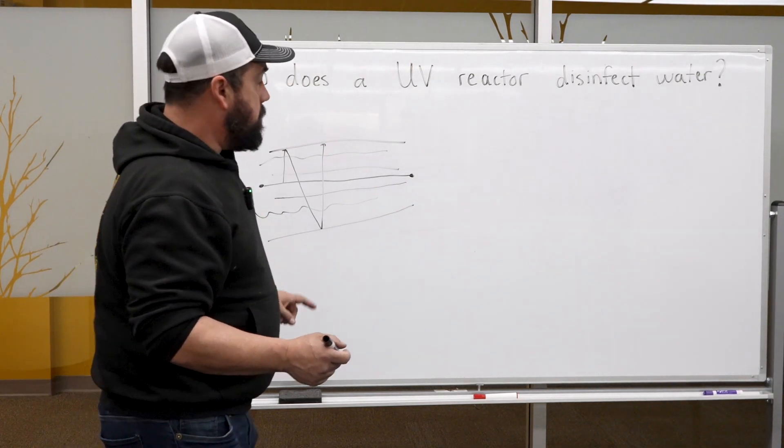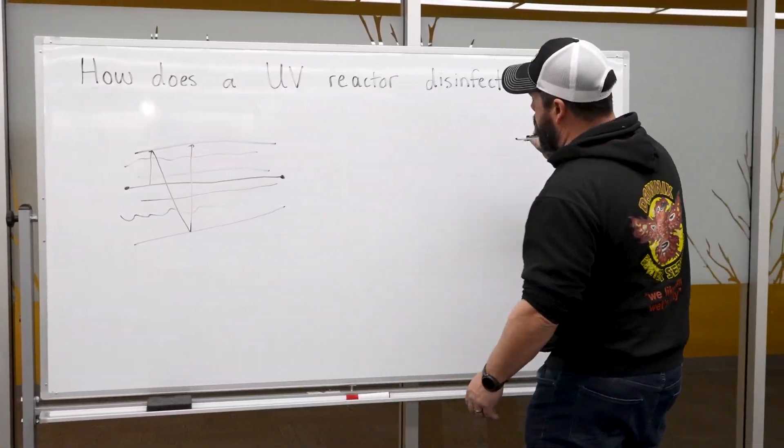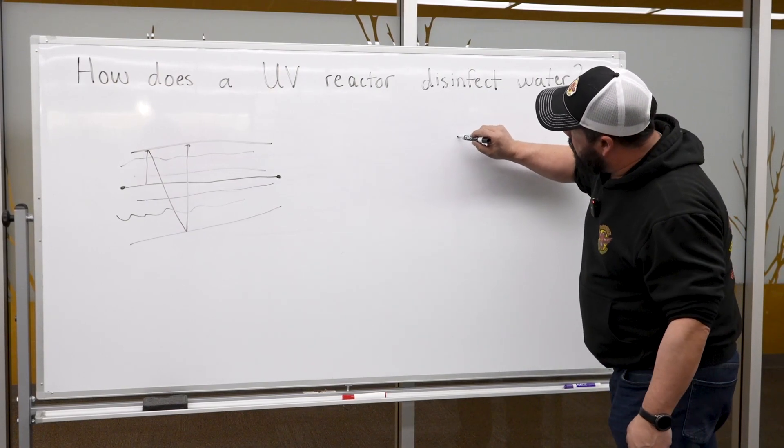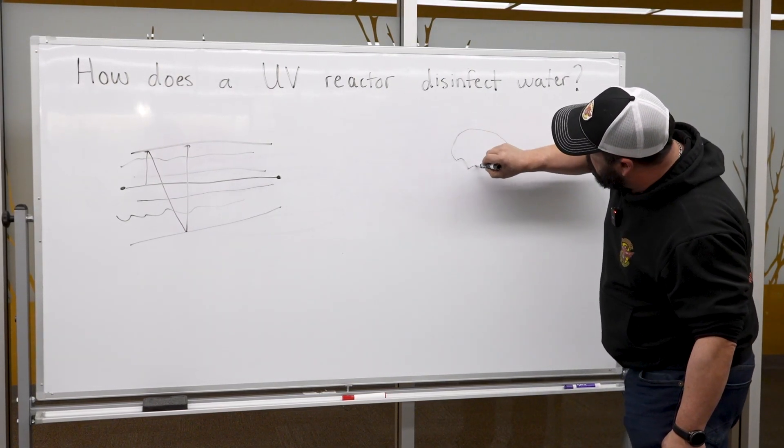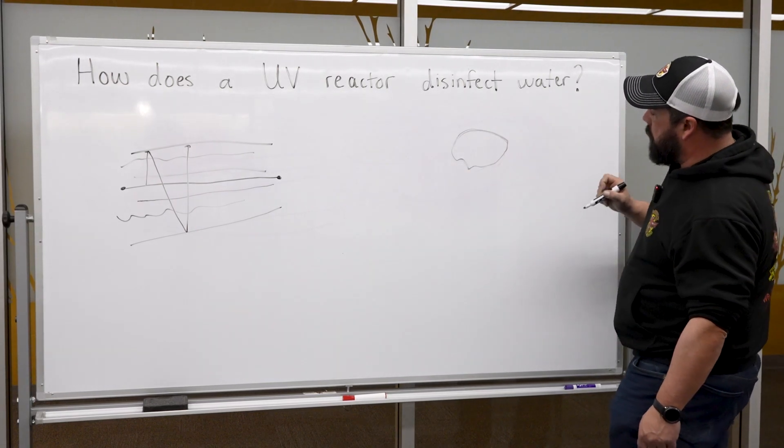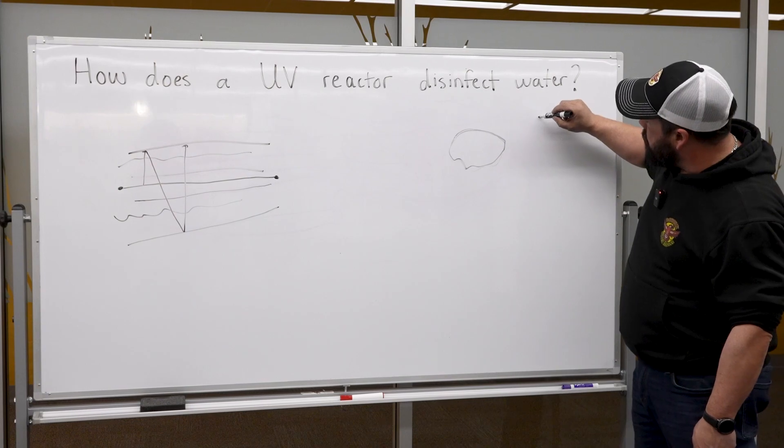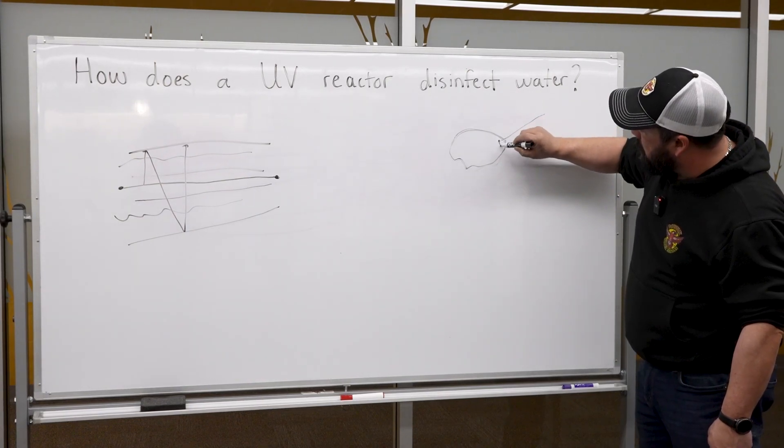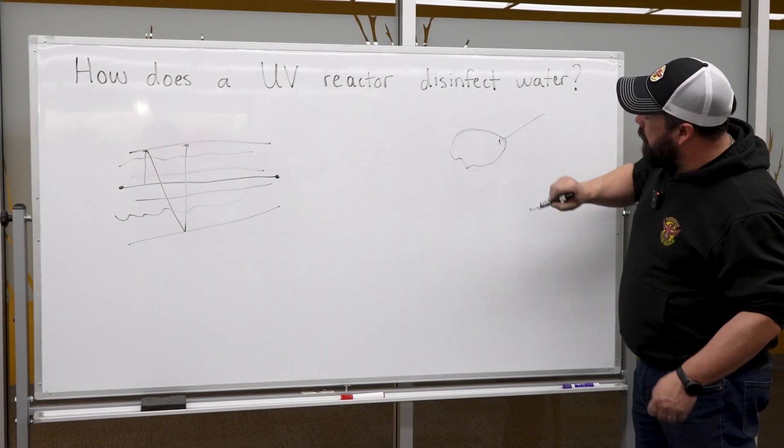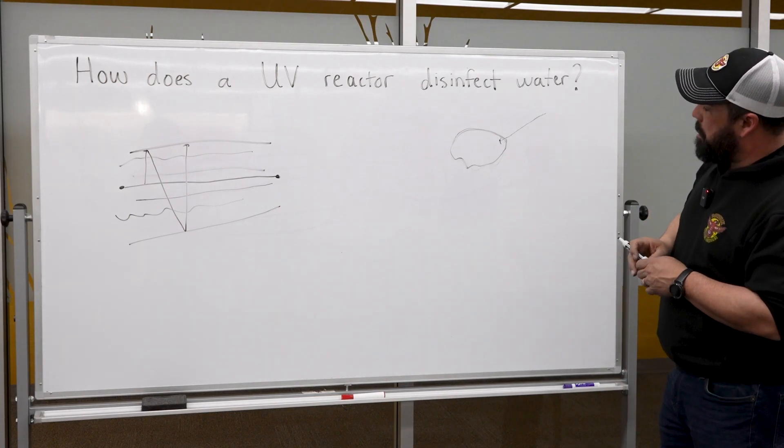Now how a beam of UV light works is you have a pathogen of some kind, whether it be protozoa or giardia, any kind of bacteria or virus. The beam of light is so intense that it punctures the protective shell around the pathogen.